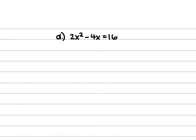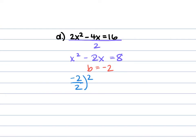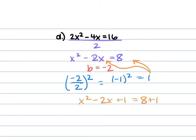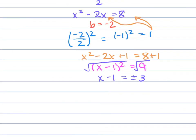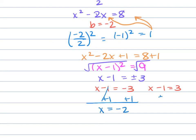For example d, we have 2x squared minus 4x equals 16. Divide everything by 2: x squared minus 2x equals 8. b is negative 2, so negative 2 over 2 squared gives negative 1 squared, which is 1. Add 1 to both sides: x squared minus 2x plus 1 equals 8 plus 1. Factor the left: x minus 1 squared equals 9. Take the square root: x minus 1 equals plus or minus 3. Form two equations: x minus 1 equals negative 3 gives x equals negative 2; x minus 1 equals positive 3 gives x equals 4.